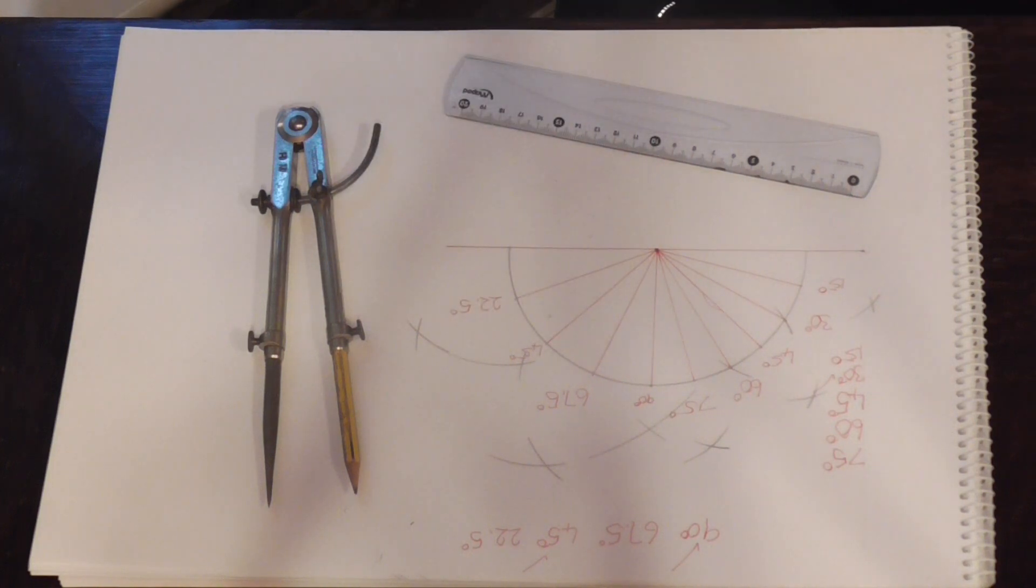A very easy way of dividing our circumferences up without using protractors or complicated math equations. We're just using our dividers or compass here.